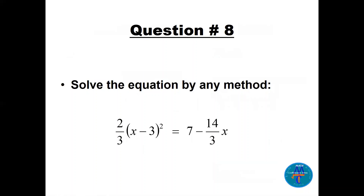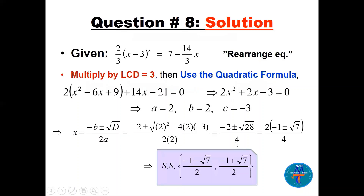Question 8: Solve the equation by any method. First identify the type — this is a quadratic, but it's not arranged. There's a squared term, fractions, and mixed terms. Multiply through by the LCD, which is 3, to remove the fraction. Then expand (x − 6)²: that's x² − 6x + 25 — bring 14x to the other side, and multiply minus 7 by 3 to get minus 21.